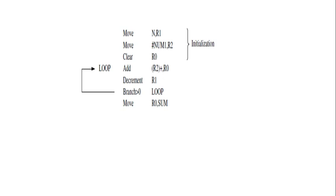Suppose our operand is 4 bytes or 32 bits. In such a situation, after fetching the effective address, the R2 content is automatically incremented by 4 to point to the next operand in the list — not the next instruction. The content of R2 is automatically incremented by 4 to point to the next operand present in the list.